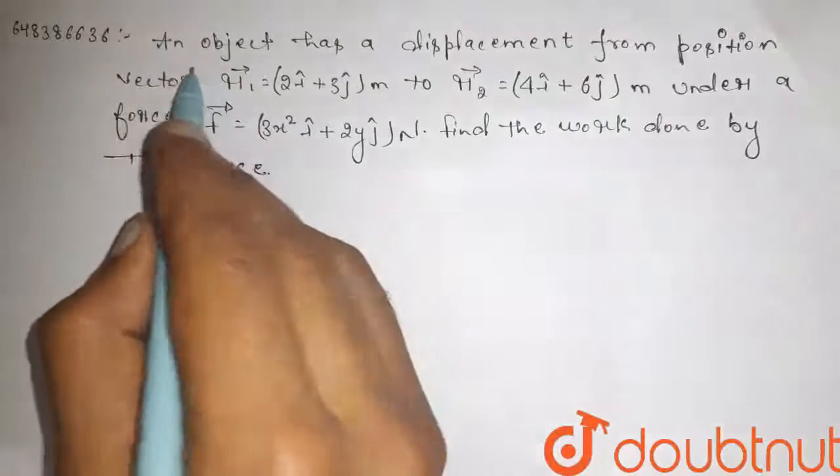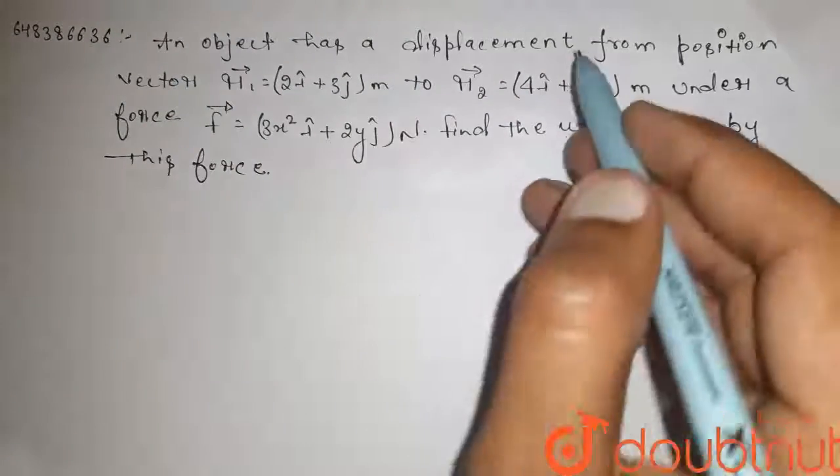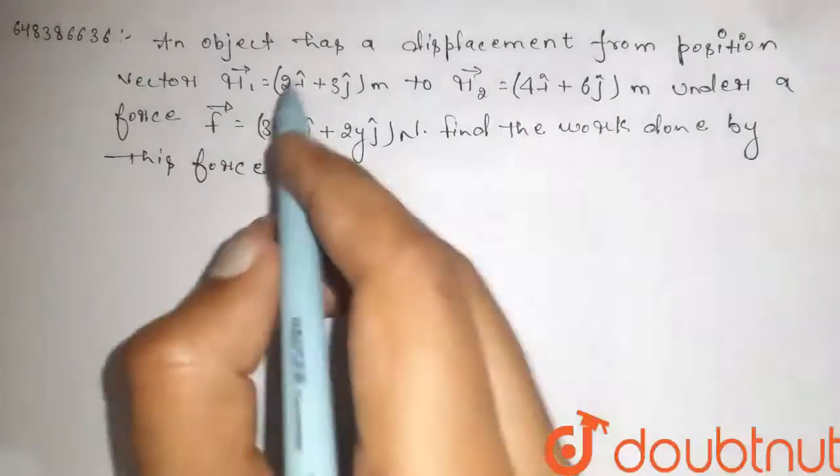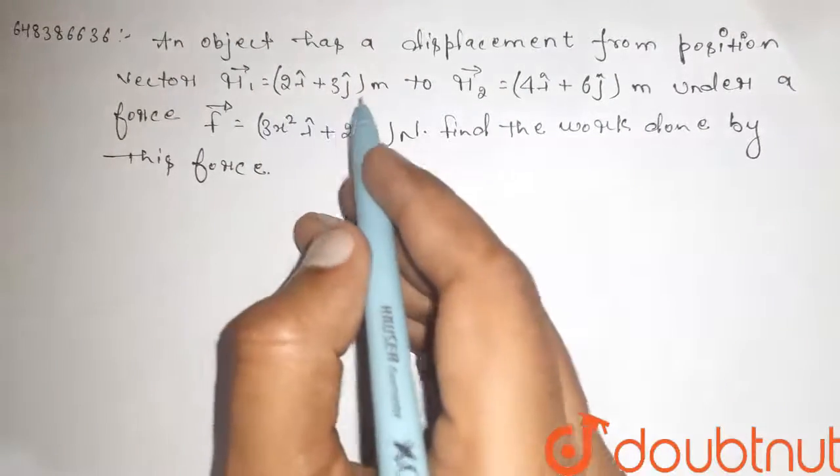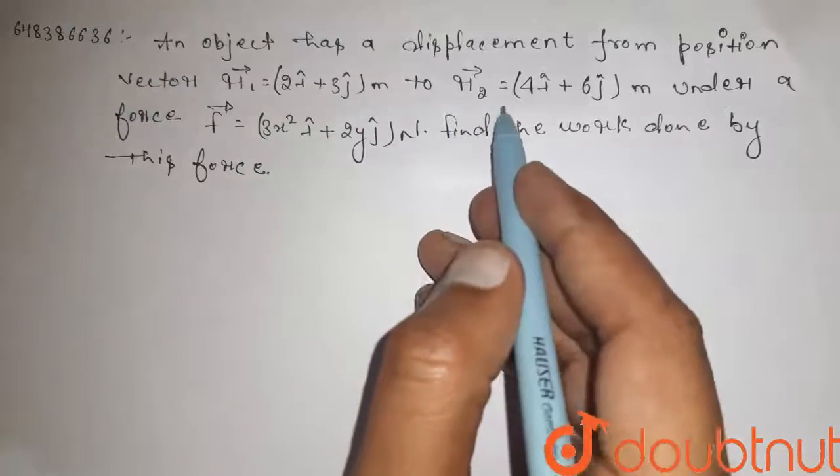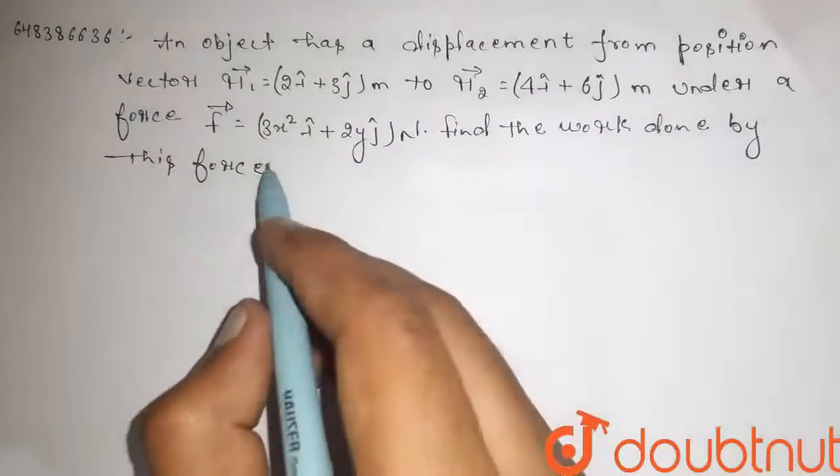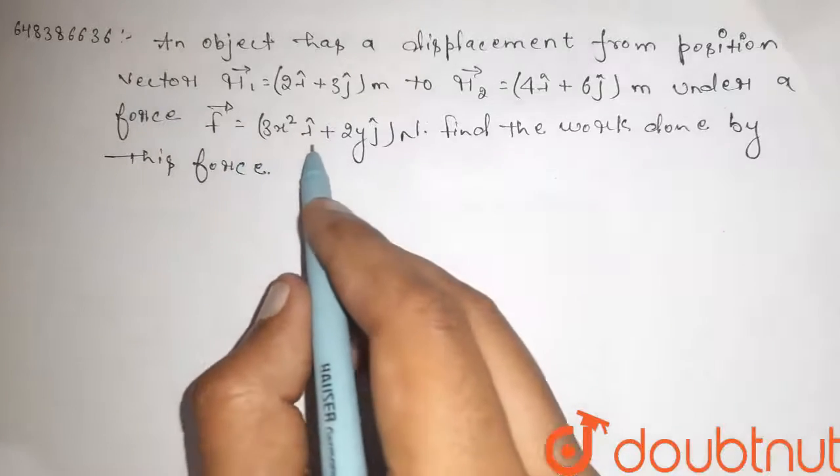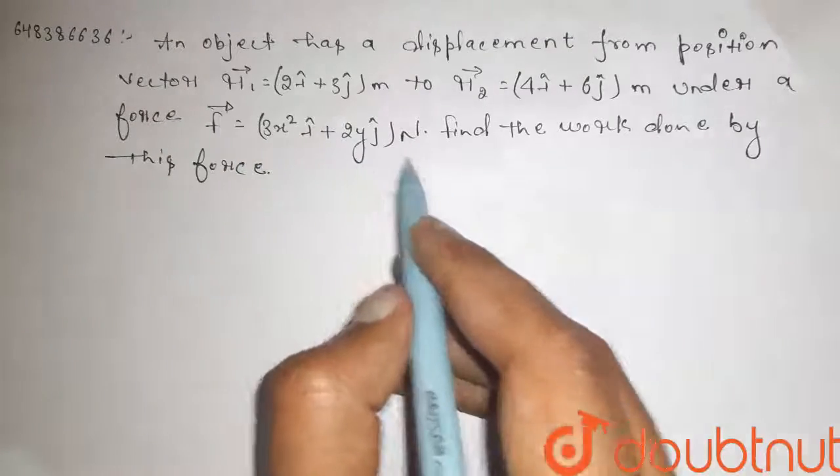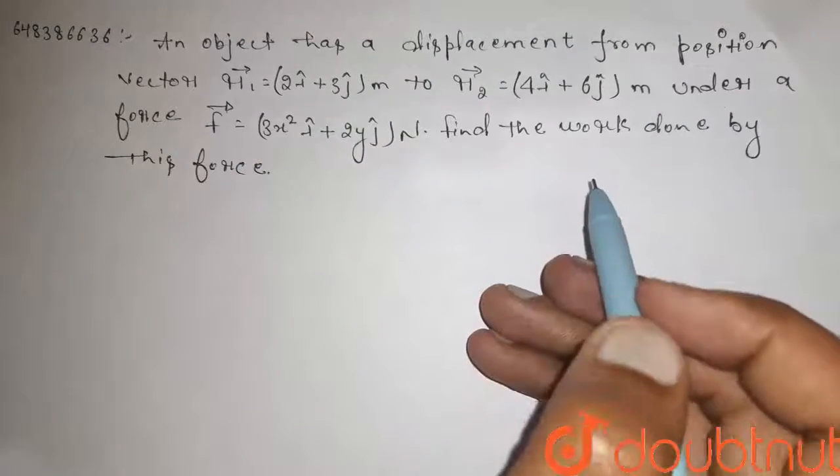Hi guys, here is the question. An object has a displacement from position vector r₁ (2i cap plus 3j cap) meter to r₂ (4i cap plus 6j cap) meter under a force F = 3x² i cap plus 2yj cap newton. Find the work done by this force.